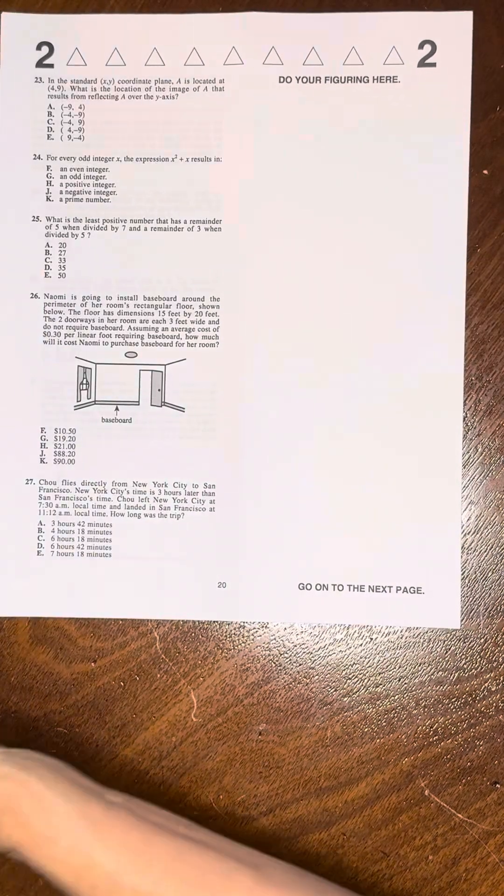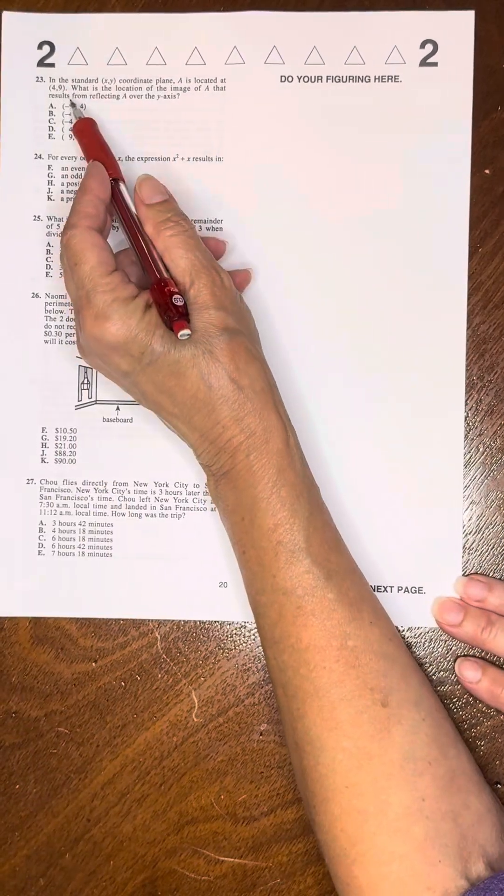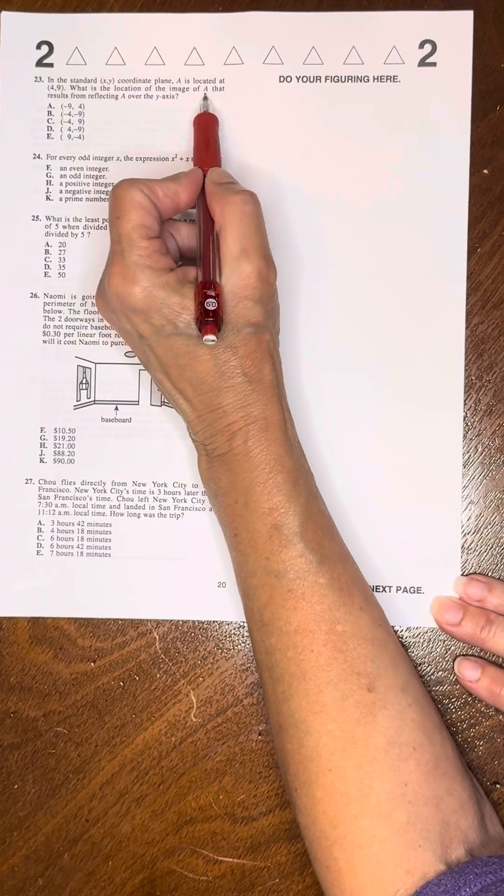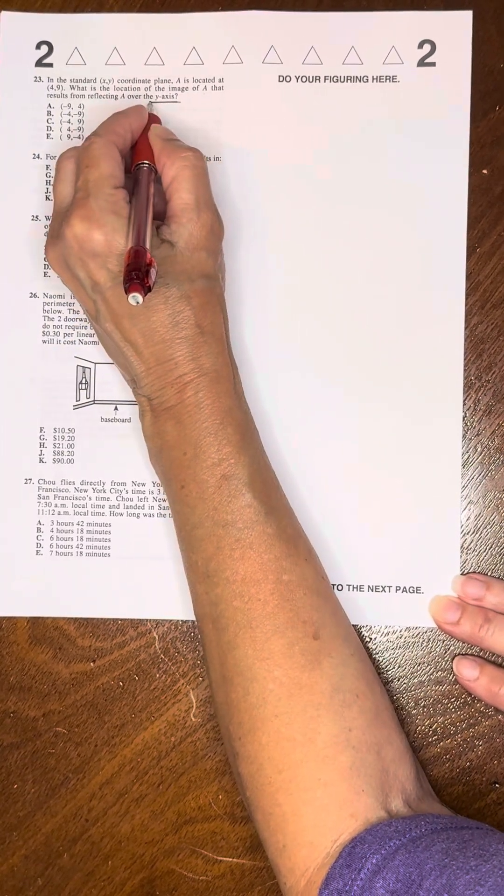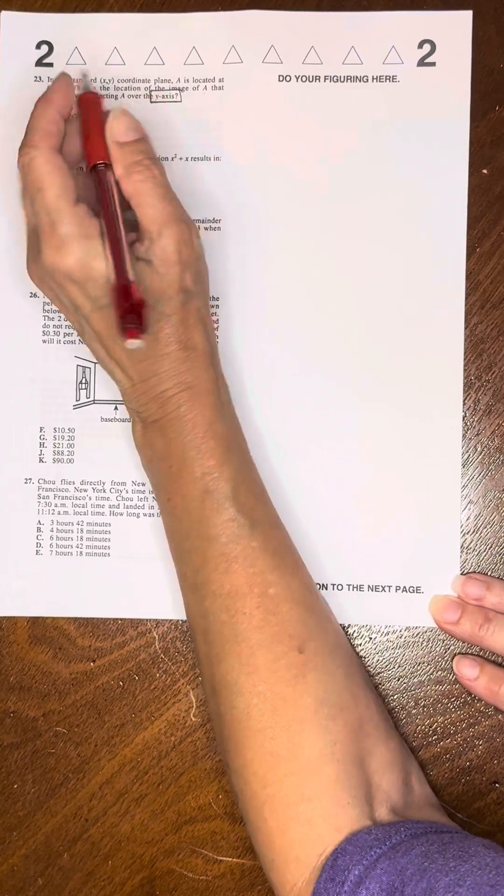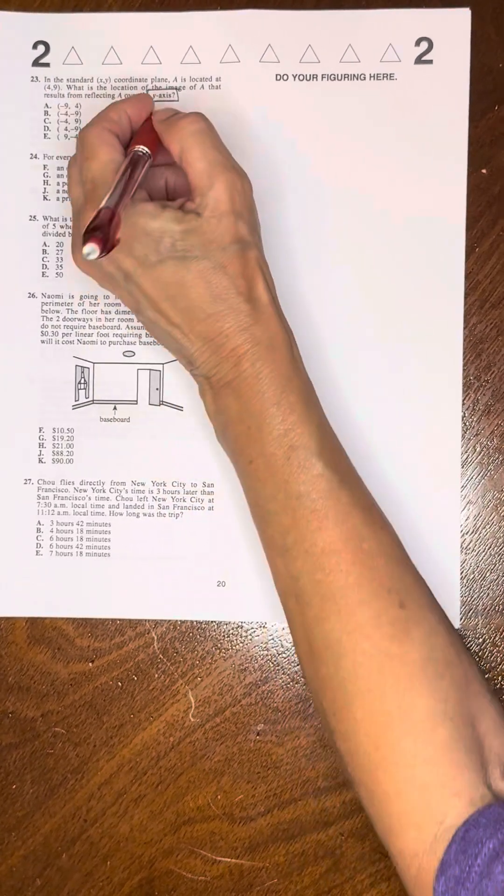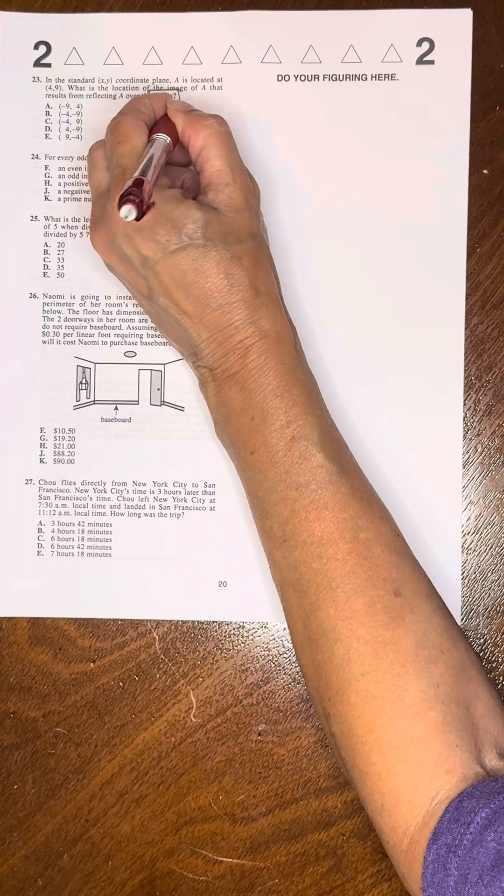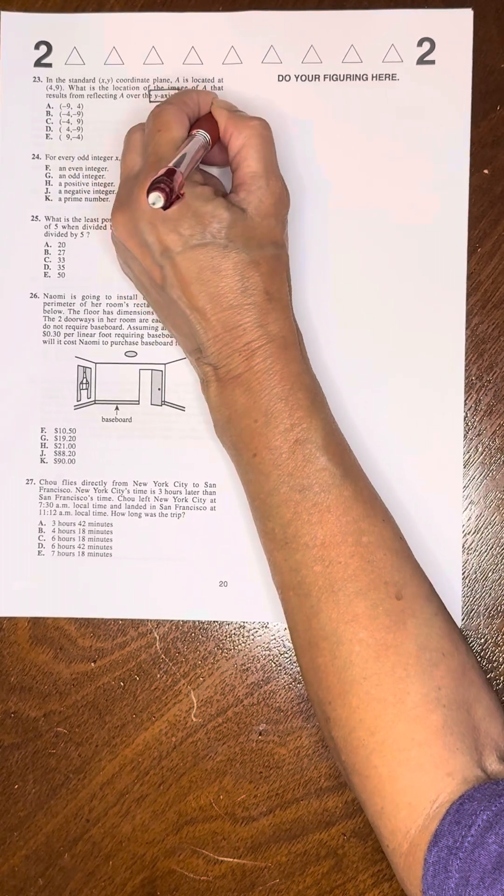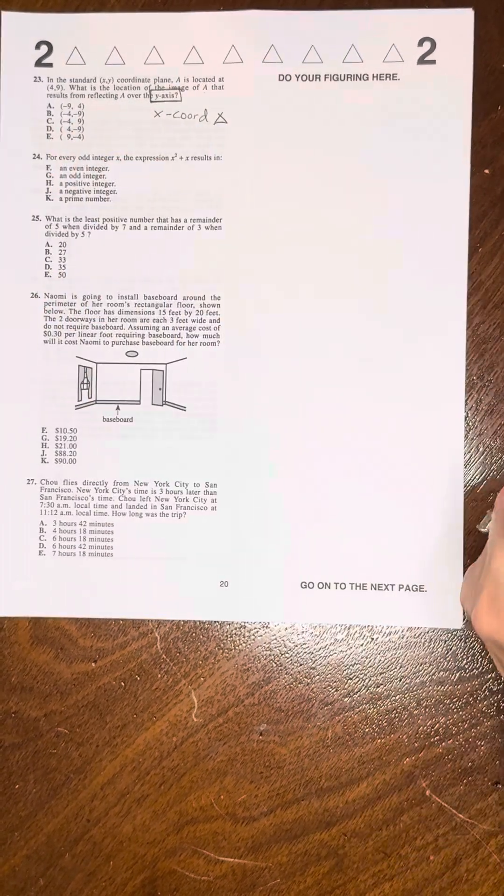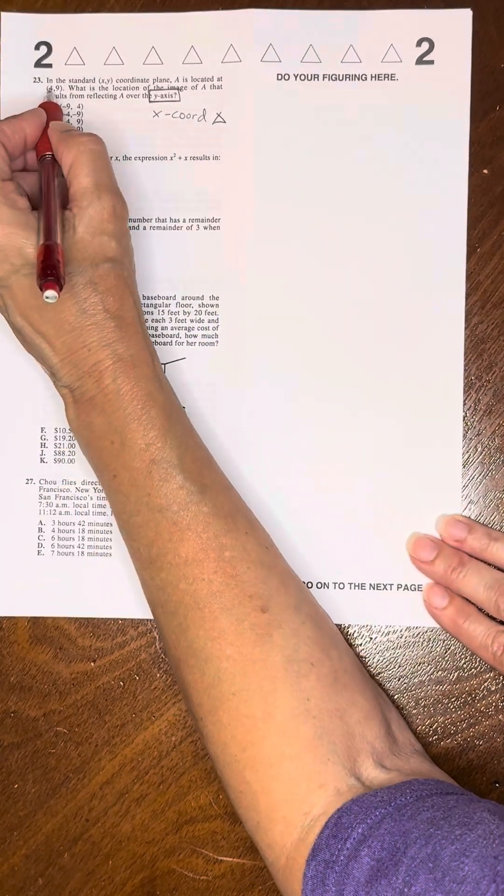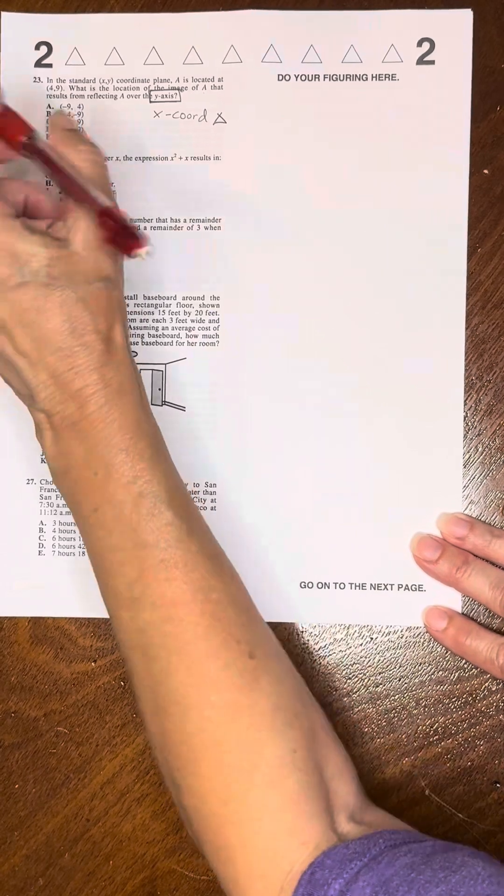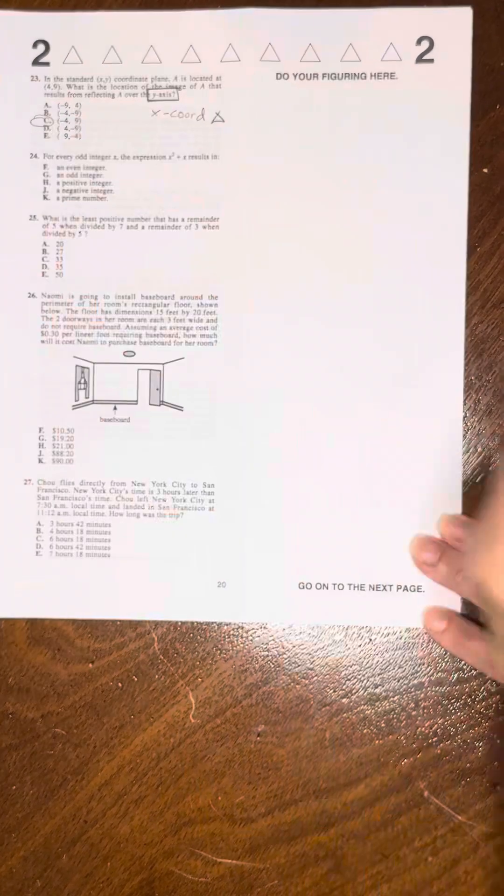Number 23: In the standard coordinate plane, A is located at 4, 9. What is the location of the image of A that results as a reflection of A over the Y axis? When you reflect over the Y axis, the X coordinate changes. It's the one that changes, not the Y. So it goes from four to negative four. It's negative four, nine. C is the solution.